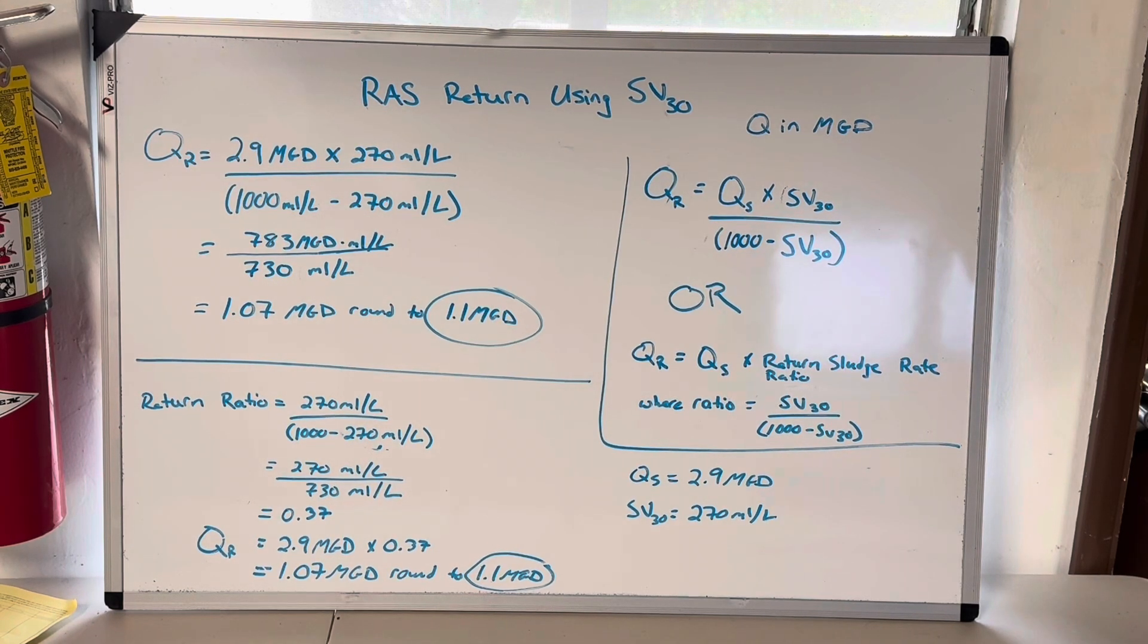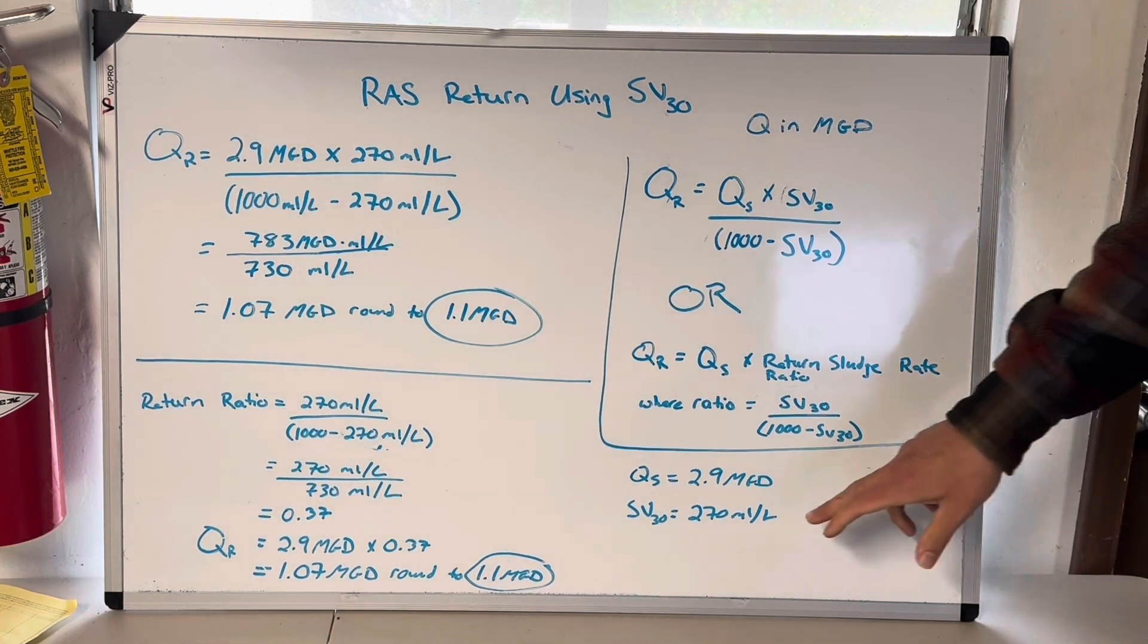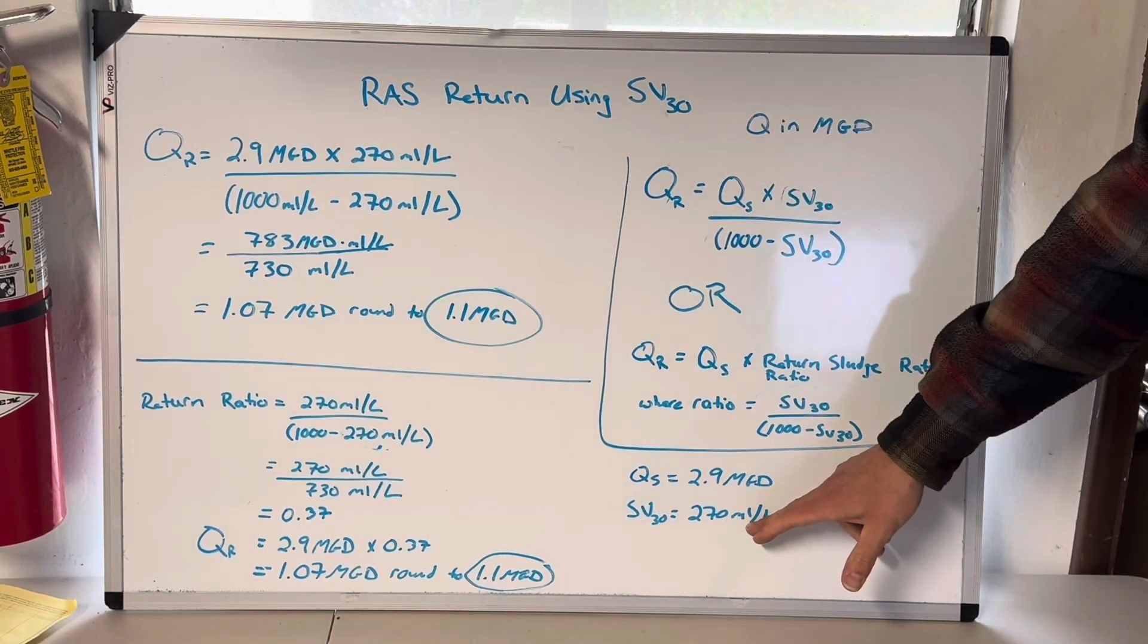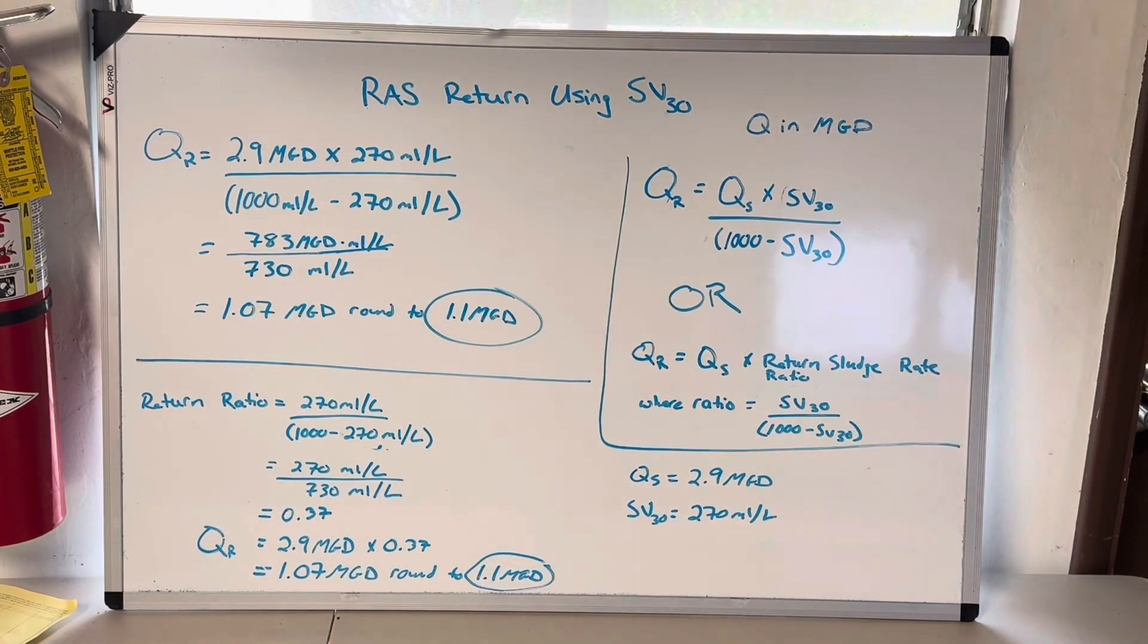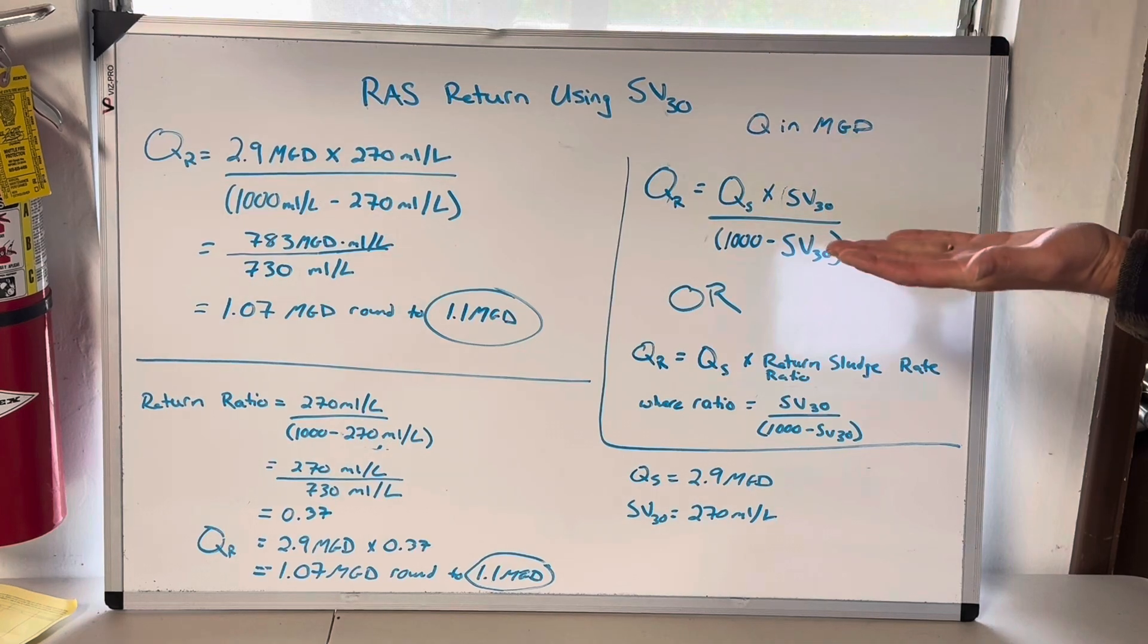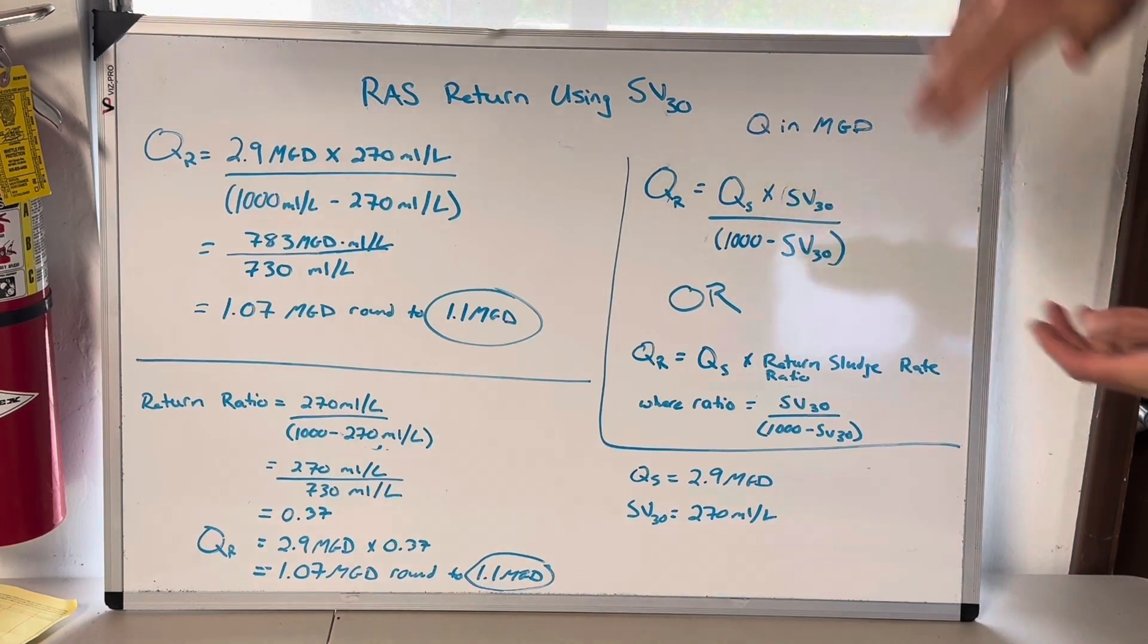You take a one liter sample. You take a one liter sample of your MLSS and you let it set up for 30 minutes and then you take a measurement where it settles. And it drops down to in this case we're given 270 milliliters per liter. So 270 milliliters of that one liter sample is settled sludge. Everything on top is clear water or should be clear.